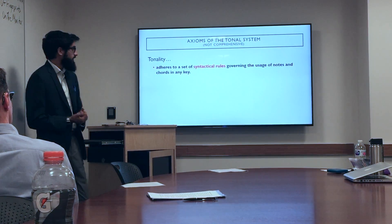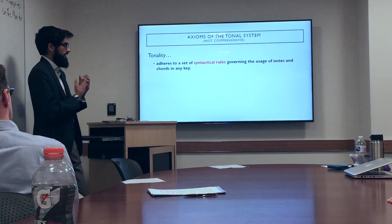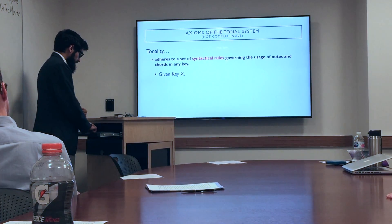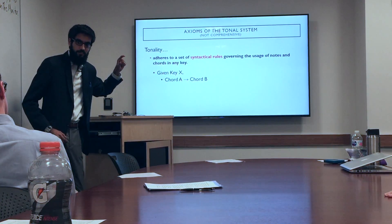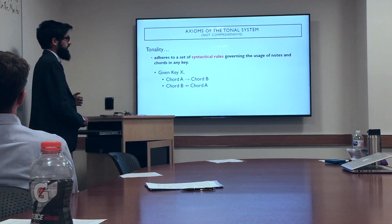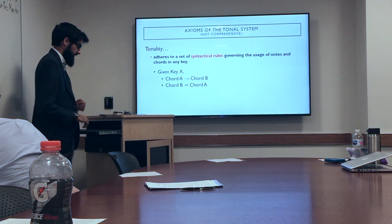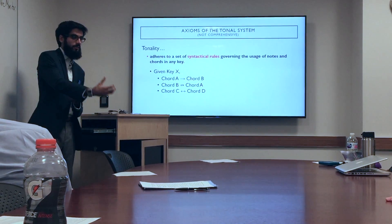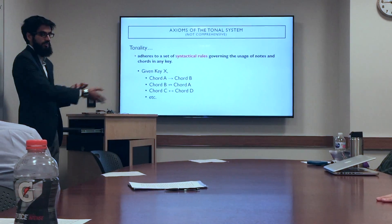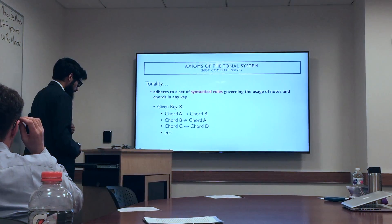Another axiom of the tonal system is that tonality adheres to a set of syntactical rules that govern the usage of notes and chords in any key. A syntactical rule is any imposition of order between two notes or chords. Given a certain key, one chord can go to another — represented by a single arrow. A chord may not be syntactically allowed to go in the reverse direction. Two chords that are interchangeable use a double-headed arrow. That's all a syntactical rule is.